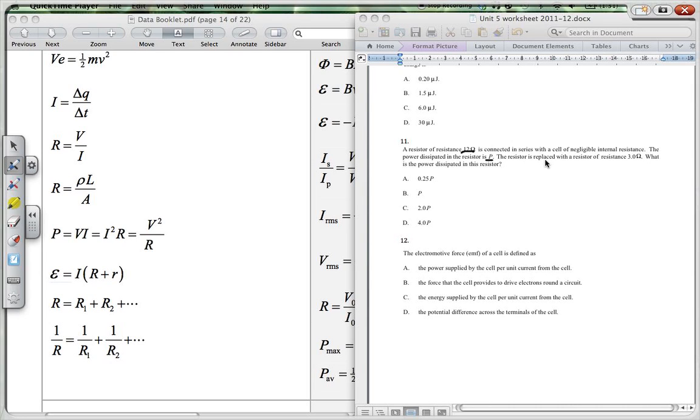The resistor is replaced with a resistor of resistance 3 ohms. What is the power dissipated in the resistor now?